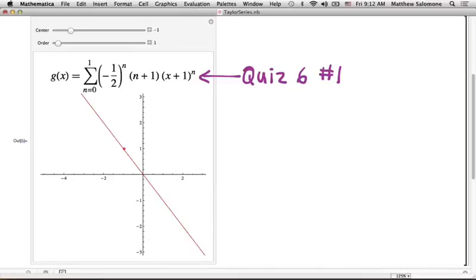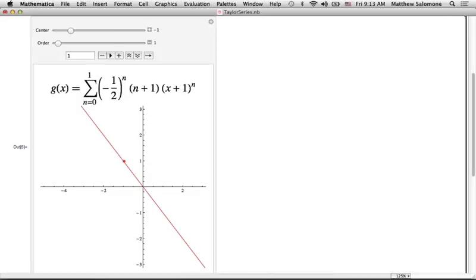Let me ask you about this power series that was on the front of our quiz. Summation negative 1 to the n times n plus 1 over 2 to the n times x plus 1 to the power n. If we want to know what the interval of convergence of this power series is using the ratio test, let's just watch it emerge.